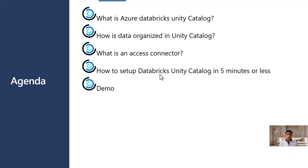If you go to Databricks or Microsoft documentation around the Unity Catalog setup, it's pretty confusing — too huge, lots of steps involved, and the document jumps from one page to another. By the time you figure it out, it's almost a couple of hours spent. So in order to simplify this process, I have written a one-click script which you can run and deploy the Unity Catalog in no time — not more than five minutes. We will show a demo of the same.